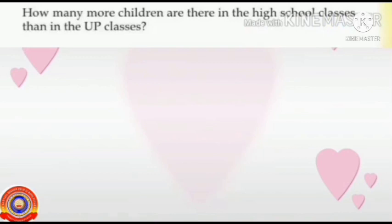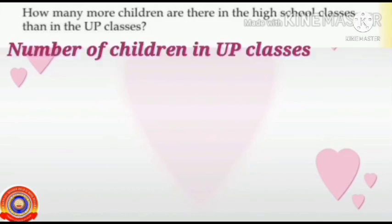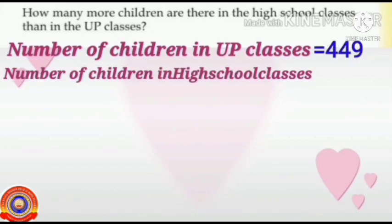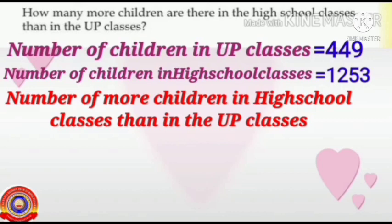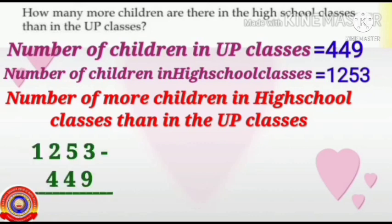See the next question. How many more children are there in the high school classes than in the UP classes? The number of children in UP classes is 449 and in high school classes is 1,253. High school classes have more children. So, to find out how many more, subtract 449 from 1,253. That is 1,253 minus 449.